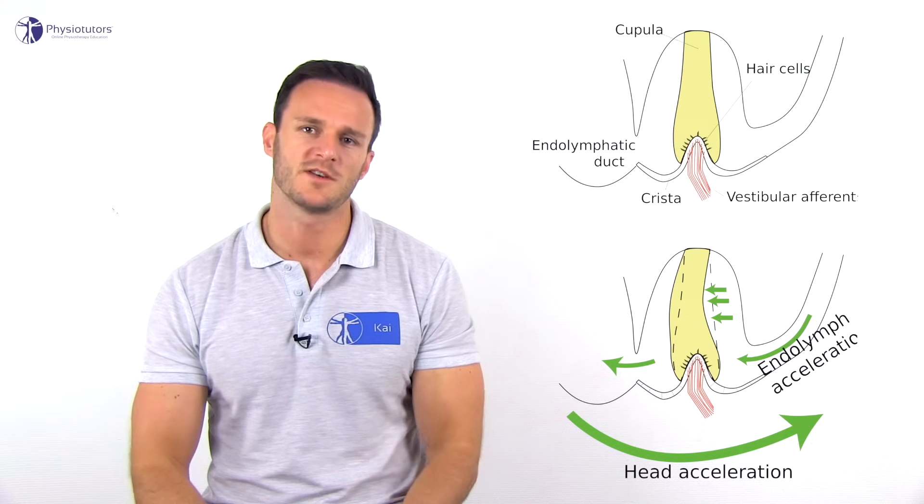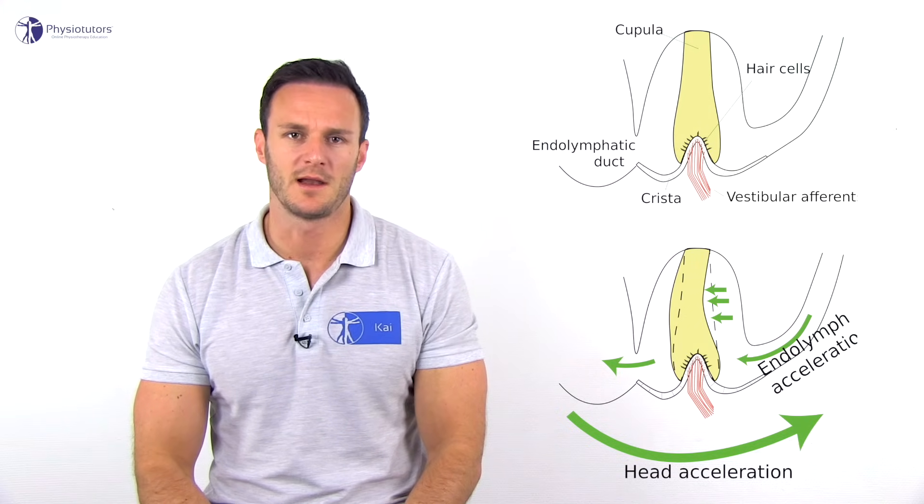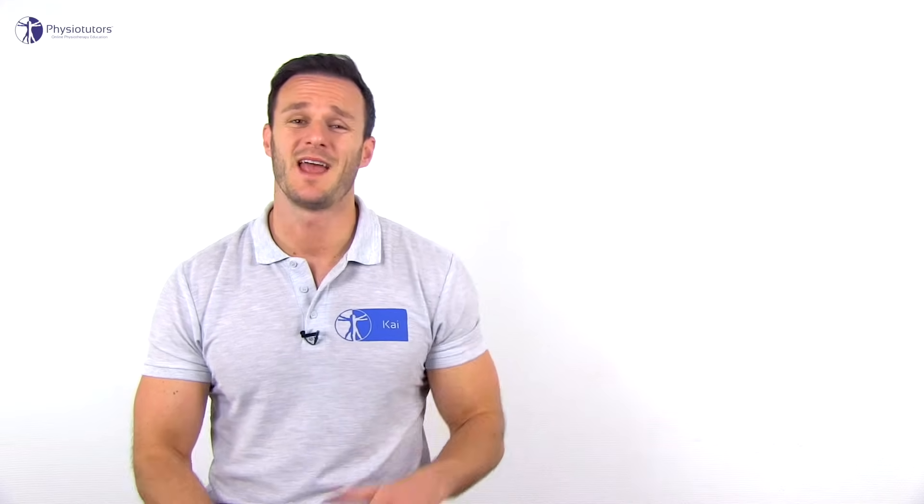The cause of BPPV is believed to be canalithiasis, affecting the posterior semicircular canal in 85 to 95 percent of all cases. In canalithiasis, free floating debris in a semicircular canal is hypothesized to act like a plunger, causing continuing movement of the endolymph even after head movement has ceased.